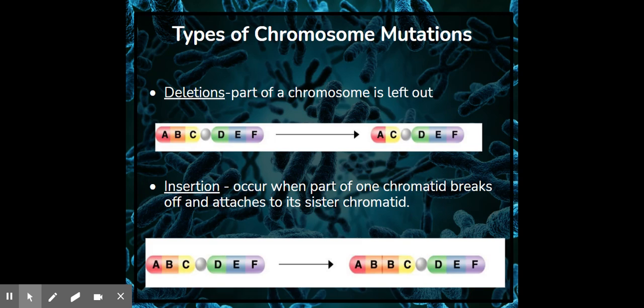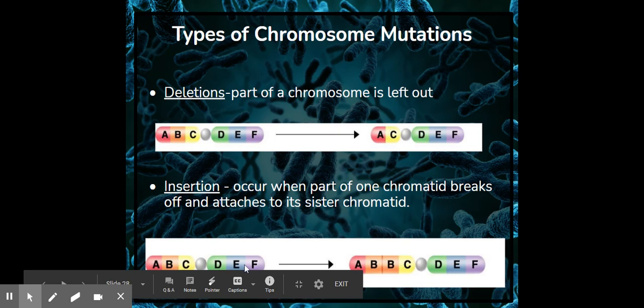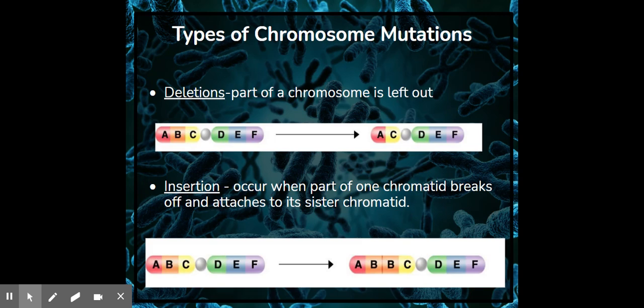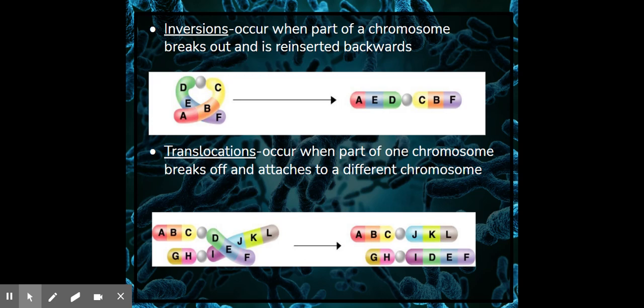Second thing would be an insertion. That's when something breaks off of another chromatid and attaches in the wrong place. So that would be something like A, B, C, D, E, F becomes A, B, B, C, D, E, F. So there's been something inserted that shouldn't be there.